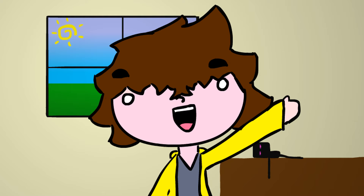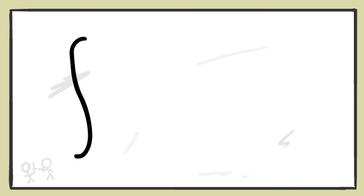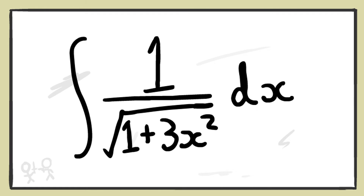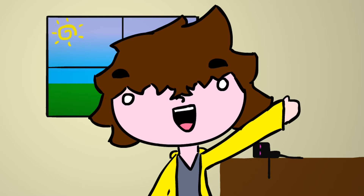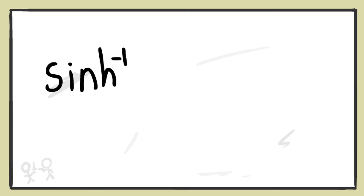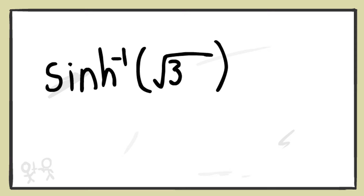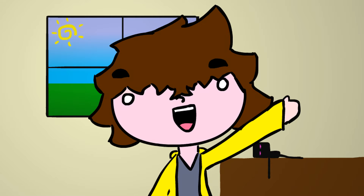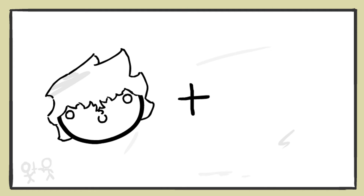And what do we get when we take the integral of 1 over the square root of 1 plus 3x squared with respect to x? That's right, the inverse hyperbolic sine function of the square root of 3 times x over the square root of 3, plus an arbitrary constant of course!